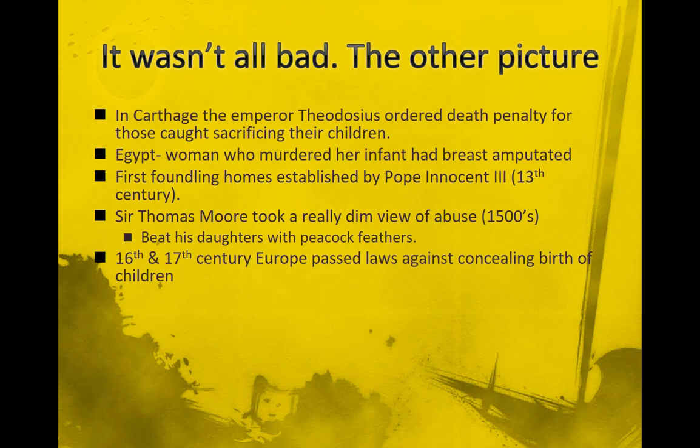In the 16th and 17th century, you see further change toward a more child-centered view. Europe passed laws against concealing the birth of children. Up until then, if you had a child, you didn't have to tell anybody about it, meaning there was no accountability for that child. If I had a child and didn't have to register that child, and that child disappeared off the face of the earth, no one would ever know. By requiring people to register births, there was the start of accountability for what happens to that child.